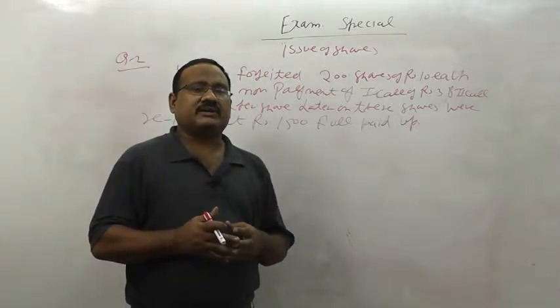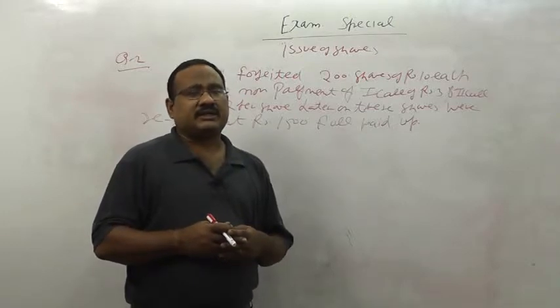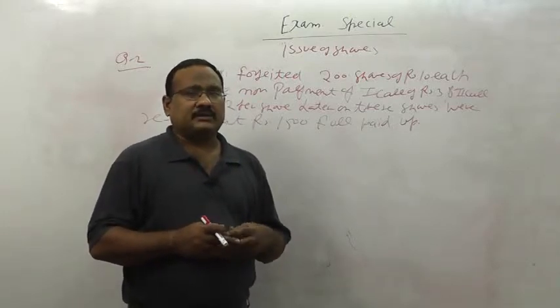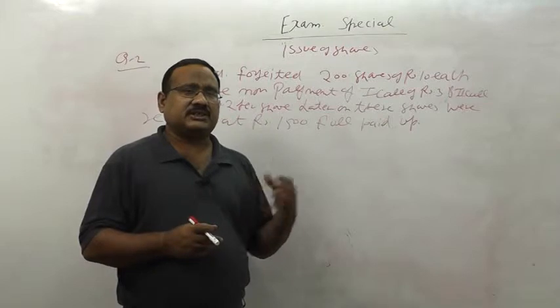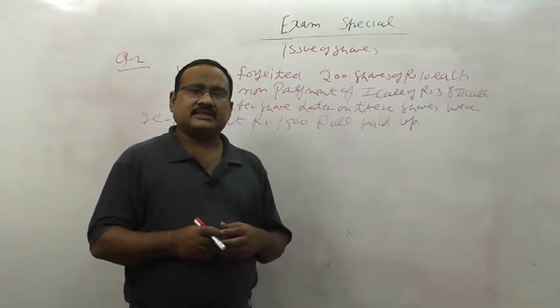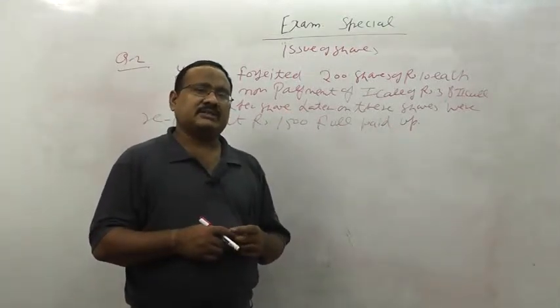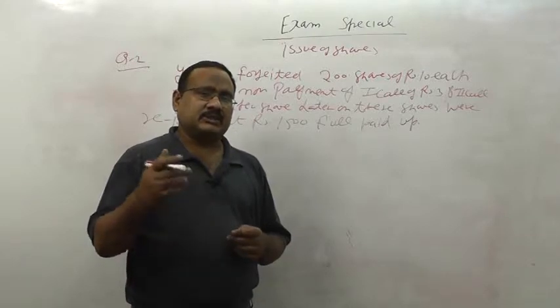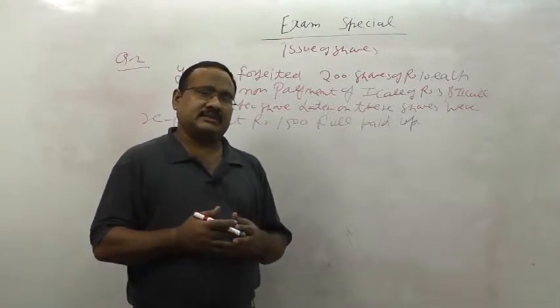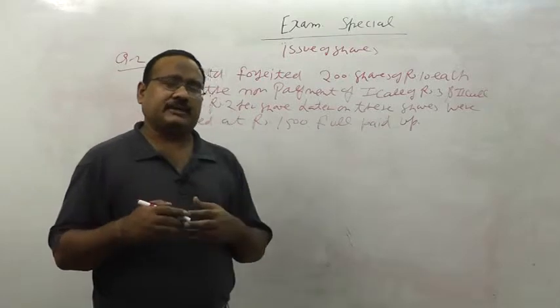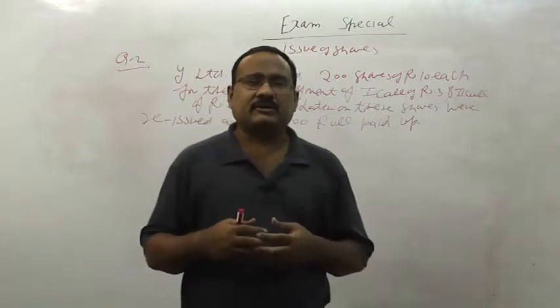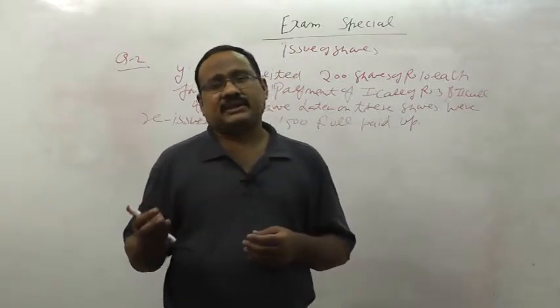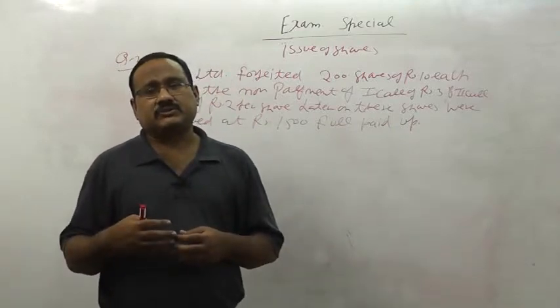Later on, these shares were reissued at Rs. 1500 fully paid up. These are direct questions, the questions are quite easy. Shares are 200 and the value of each share is 10. Why the shares forfeited? Because the shareholder did not pay first call of Rs. 3 and second or final call of Rs. 2.